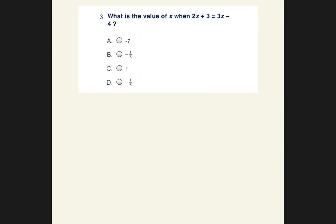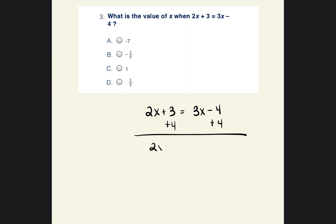Question number 3: what is the value of x when 2x plus 3 equals 3x minus 4? I like to write it out: 2x plus 3 equals 3x minus 4. I'm going to try to get all the x's on one side and all the numbers on the other side. So I'll add 4 to both sides, leaving me with 2x plus 7 equals 3x, and the 4s cancel out.